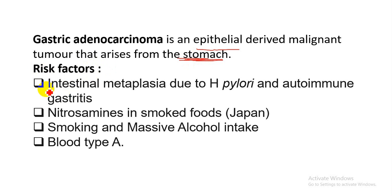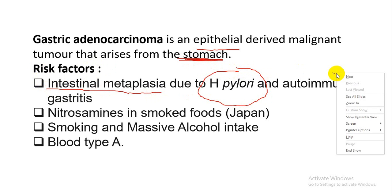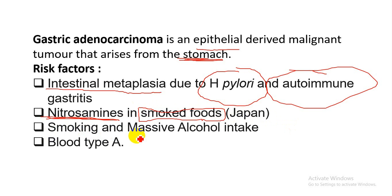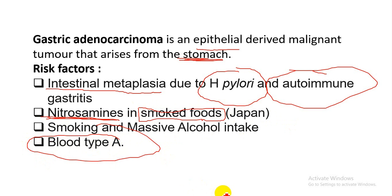The main risk factor is intestinal metaplasia, due to Helicobacter pylori infection and autoimmune gastritis. Another factor is nitrosamines, present mainly in smoked food, which is quite common in Japan — therefore Japanese are more prone to gastric adenocarcinoma. Other risk factors include smoking and massive alcohol intake.